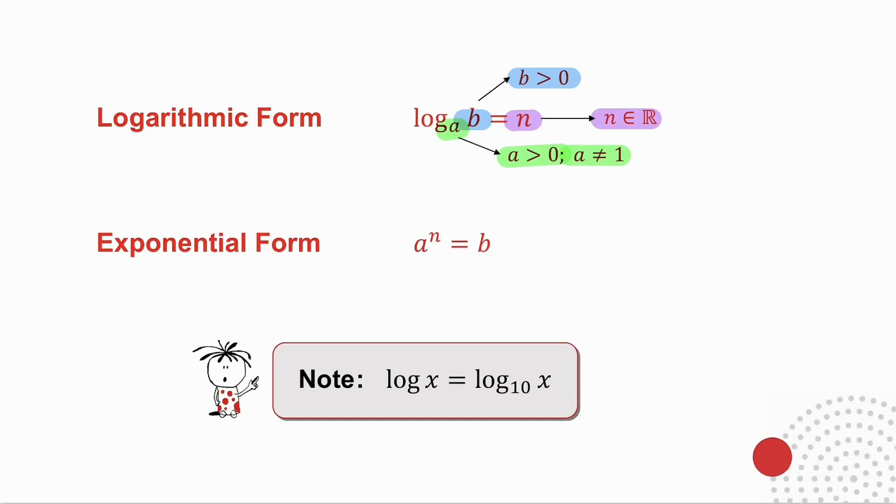Now exponential form and logarithmic form. You have got to be able to swap from one to the other and vice versa very easily. So you need to know how do you get from logarithmic form to exponential form: a to the n equals b. How do you get from exponential form to logarithmic form? Well there's my a to the n equals b. Now note, if you get no base given to you, so you just get log x, that means log to the base 10 of x. So if there's no base, it's implied base 10.